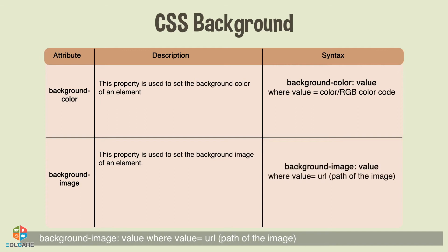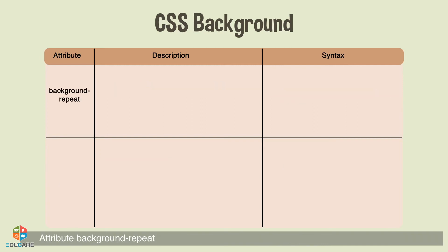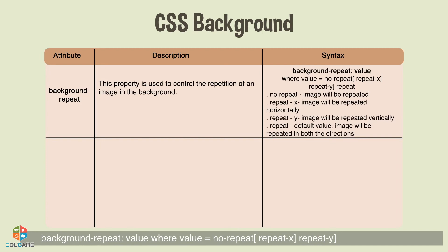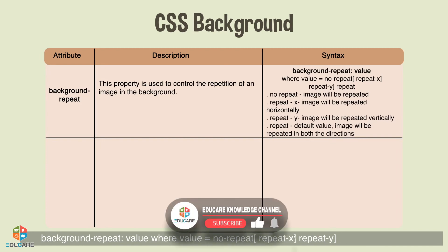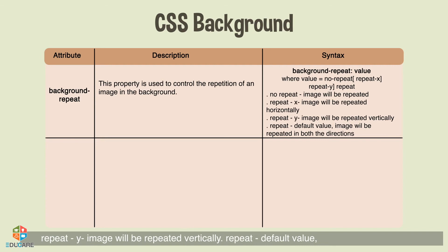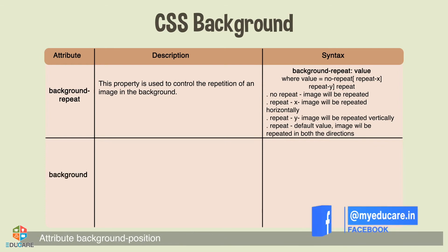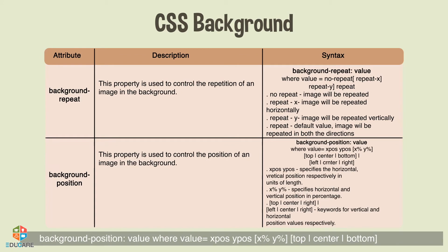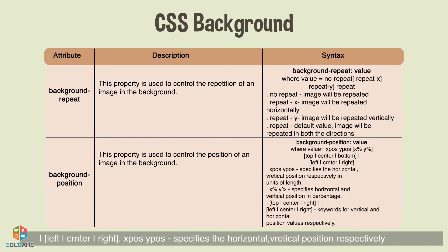The background-repeat property is used to control the repetition of an image in the background. Its value can be: no-repeat (the image will not be repeated), repeat-x (repeated horizontally), repeat-y (repeated vertically), or repeat, which is the default and repeats the image in both directions. The background-position property controls the position of the background image. Its value can be x-position followed by y-position, x-percentage followed by y-percentage, or keywords: top, center, or bottom for vertical, and left, center, or right for horizontal positioning.